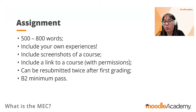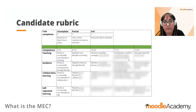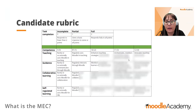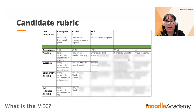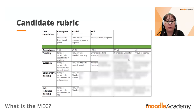For the assignments, candidates can resubmit twice after the first grading and feedback. The pass grade is set at B2 level. Assignments are evaluated with a rubric — vertically are the competencies of the course, and horizontally the levels varying from A1, A2, B1, B2, C1, to C2.